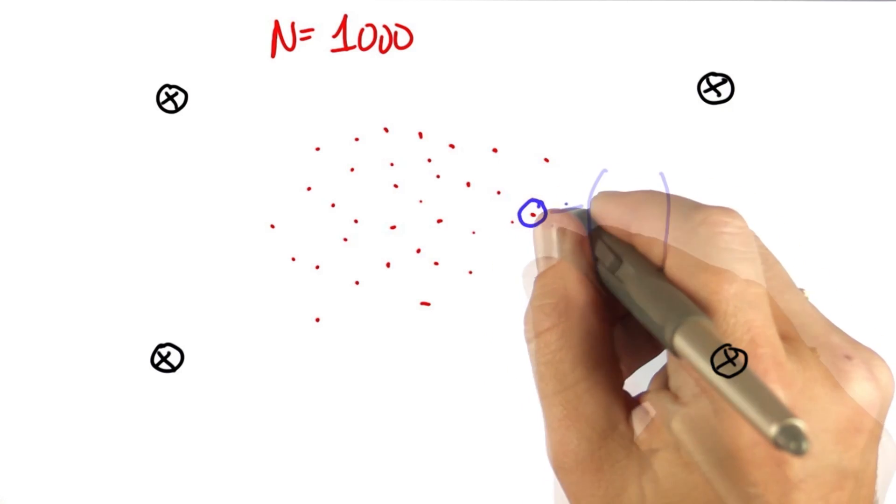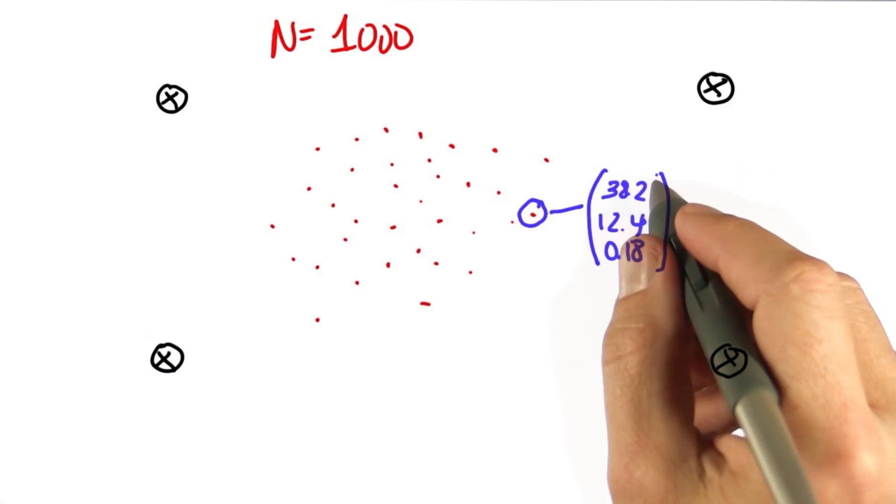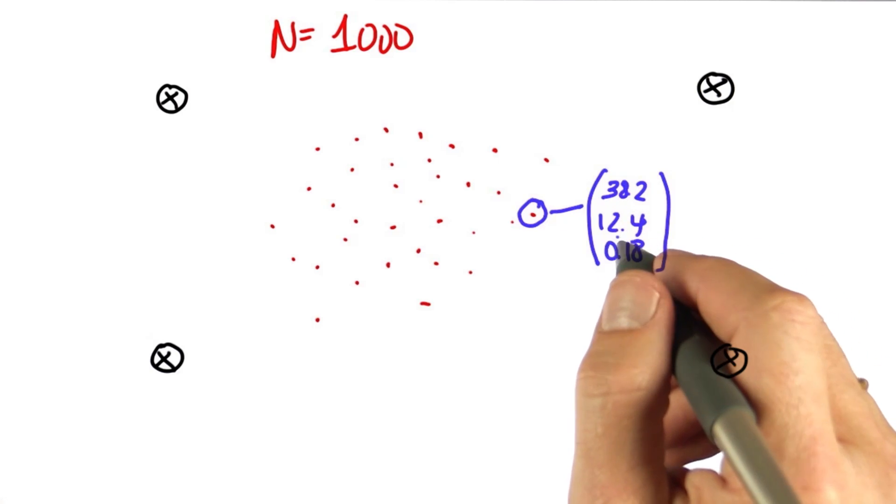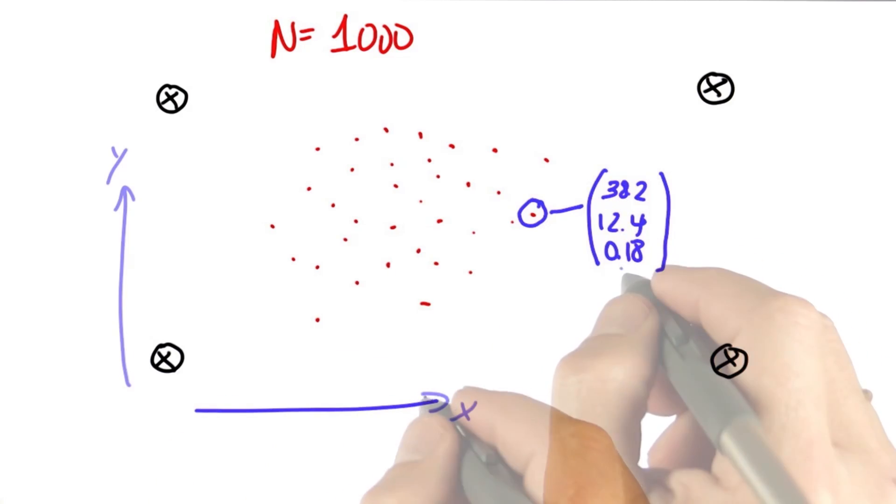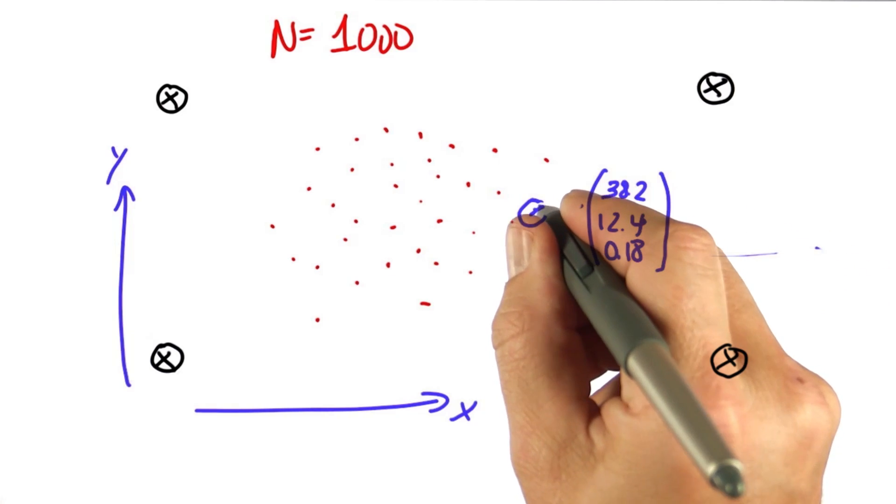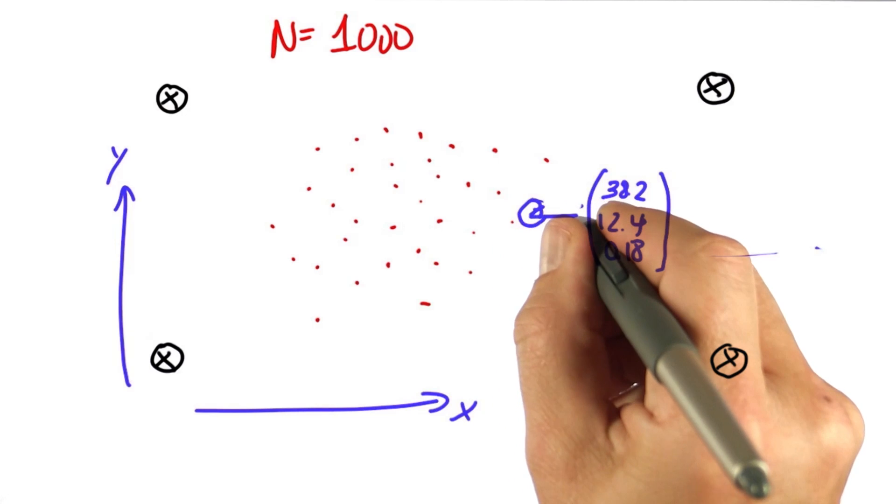Each of these dots is a vector which contains an x-coordinate, in this case 38.2, a y-coordinate, 12.4, and a heading direction of 0.1, which is the angle at which the reward points relative to the x-axis.